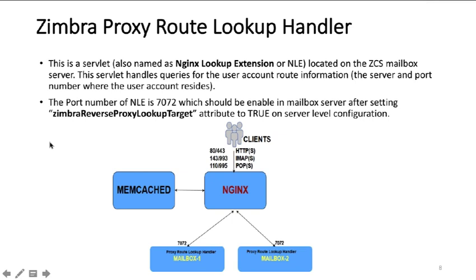The third component in Zimbra Proxy is the Zimbra Proxy route lookup handler. This is a servlet, also called NLE, as discussed earlier. It is located on Zimbra mailbox servers and not on the proxy server. The other two components — Nginx and Memcached — are on the proxy node, whereas NLE resides on the mailbox node.